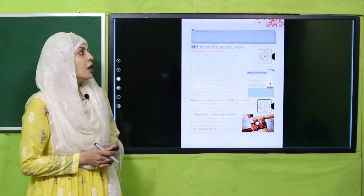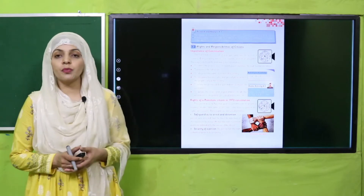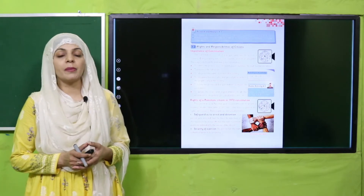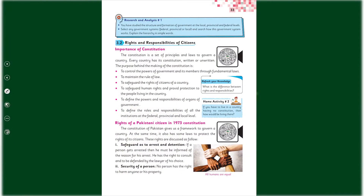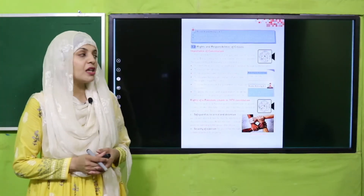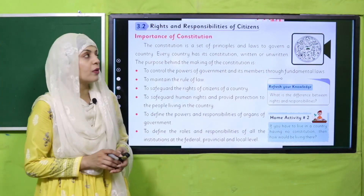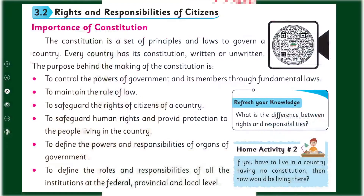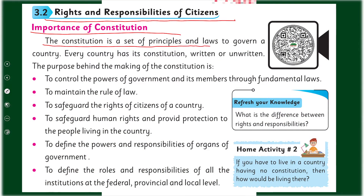Now let's move forward. Please open page number 33 in your Social Studies Grade Five books. I hope everybody has opened the page. Let's start reading — put your fingers where I will read. 'Rights and Responsibilities of Citizens — Importance of Constitution. The constitution is a set of principles and laws to govern a country.'